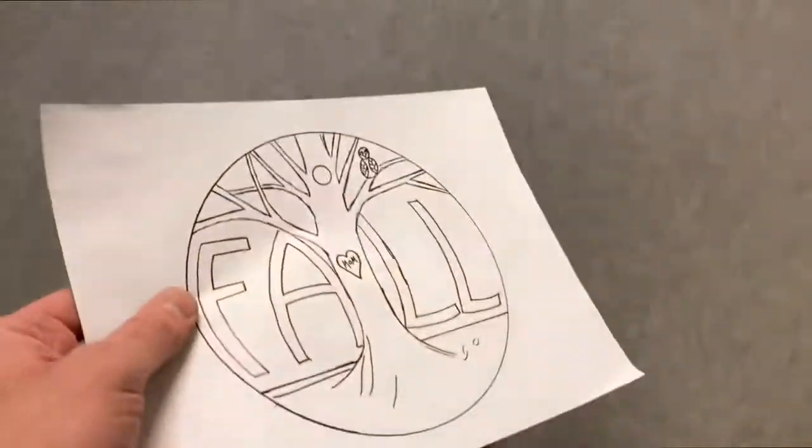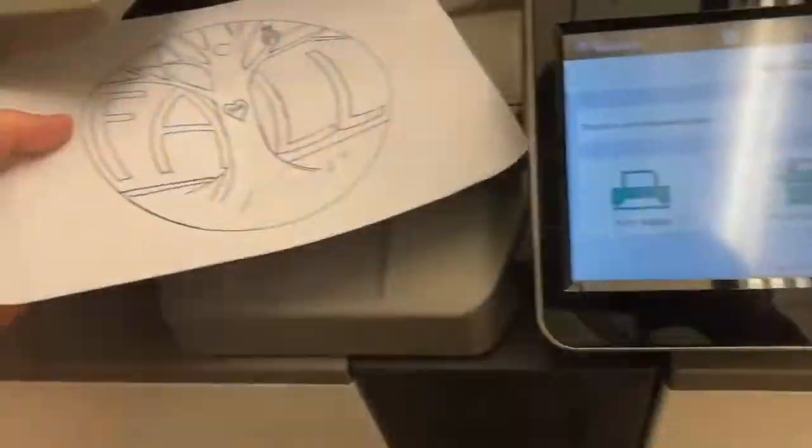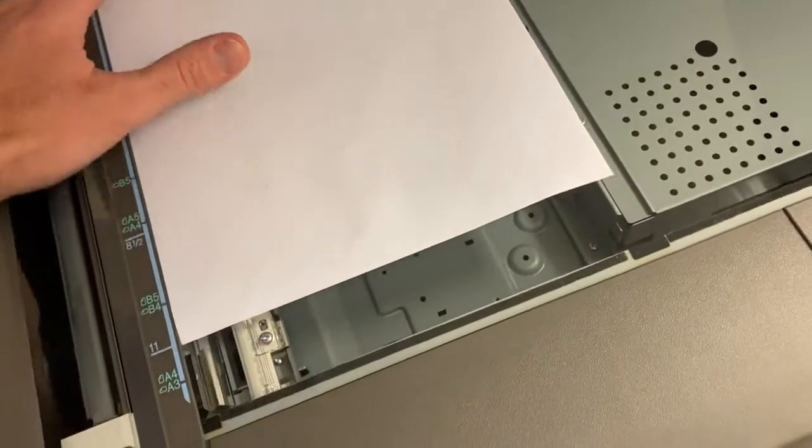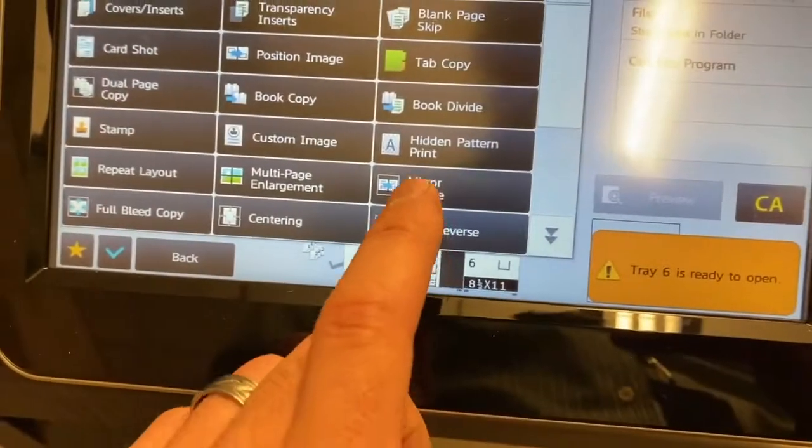Because I want to do a double-sided laser cut, I need to take this to the copier and make a copy of it, but in mirror mode. Because I want this to be backwards when I laser cut it.